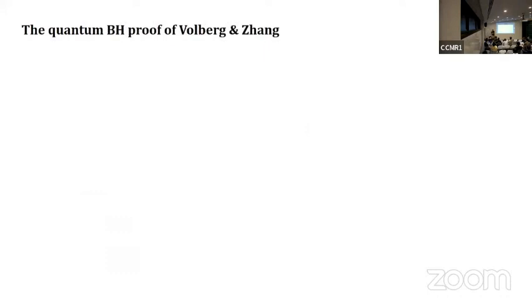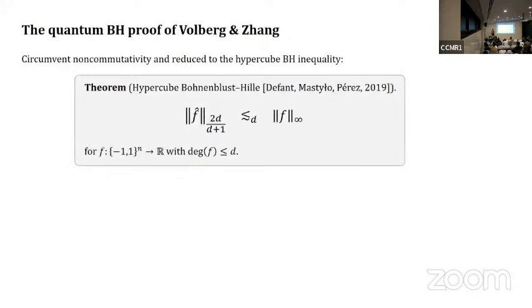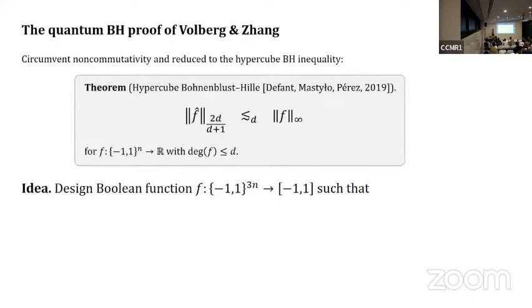The quantum BH proof of Volberg and Zhang. The idea is circumvent non-commutativity and we want to use this classical inequality. Here instead of a quantum operator, we have a Boolean function, and when we write it as a multilinear polynomial that has degree at most D, we want again to bound this special L^p norm by the supremum of F. How can we relate this to the inequality we want to prove which is non-commutative?